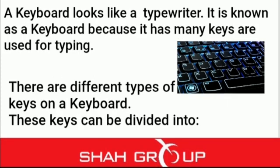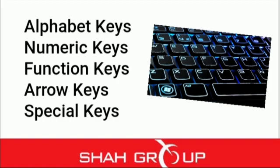A keyboard looks like a typewriter. It has many keys that are used for typing. There are different types of keys on a keyboard. These keys can be divided into: alpha keys, numeric keys, function keys, arrow keys, and special keys.